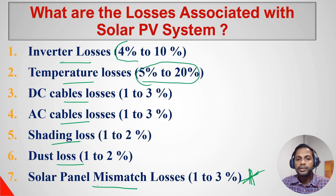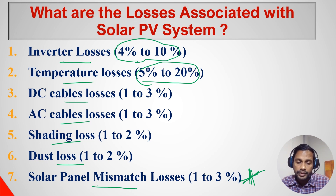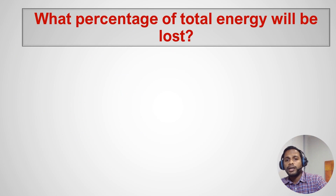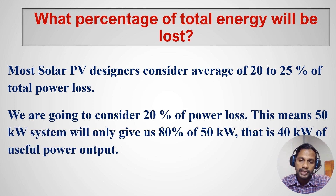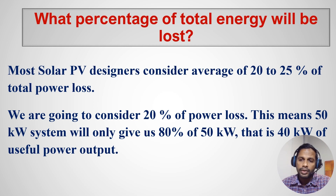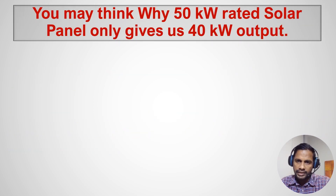Solar companies and consultants typically take 20–25% as total power loss for a solar PV system. In this analysis we use 20% loss — so our 50 kW system loses 20%, giving us only 40 kW of actual power output. We will discuss this further in the sensitivity analysis section at the end.